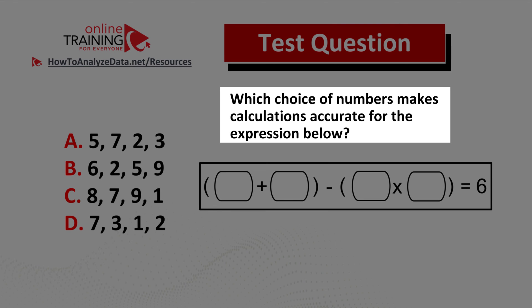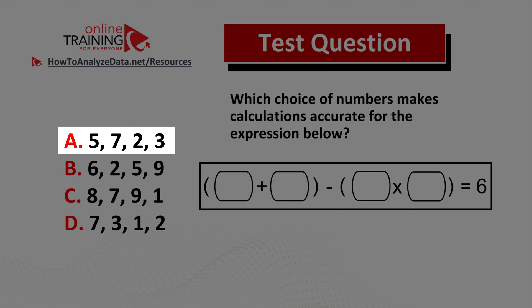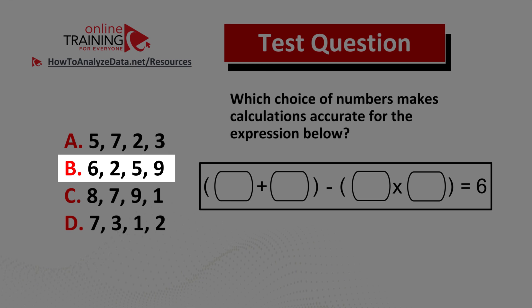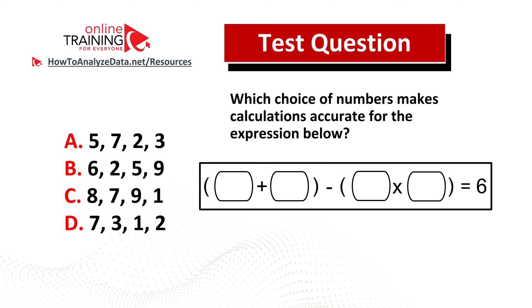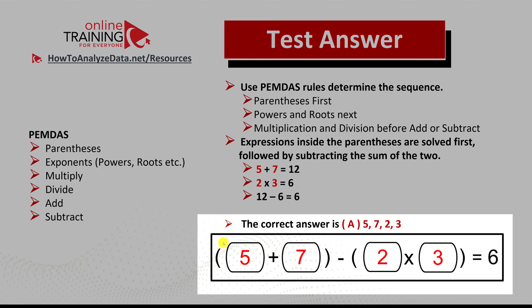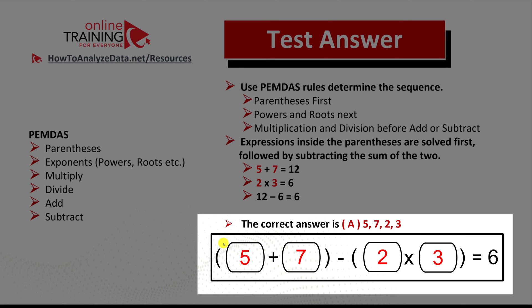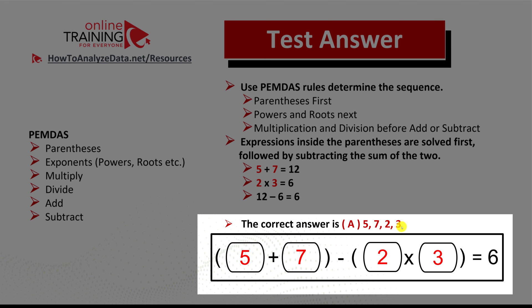Let's look at a real life assessment test question which validates your ability to do mental math. Which choice of numbers makes calculations accurate for the expression below? You have two groups of numbers — the first in parentheses — and an expression that equals six. The four choices are: choice A five seven two three, choice B six two five nine, choice C eight seven nine one, and choice D seven three one two. To get the correct solution, remember that calculations in parentheses are done first. The correct combination is choice A: five seven two three.